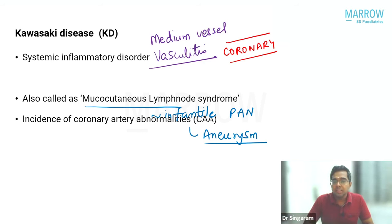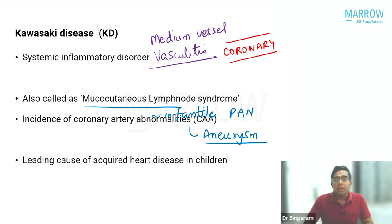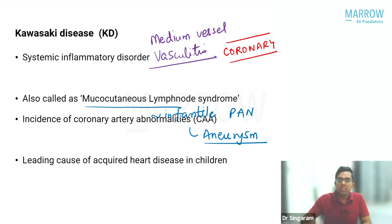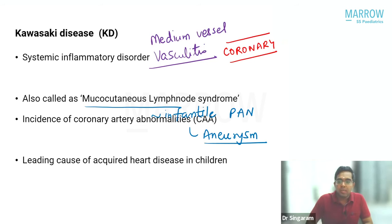Kawasaki disease is the most common childhood vasculitis in India. Worldwide, Henoch-Schönlein Purpura is the most common, but in India it is now Kawasaki disease. Additionally, Kawasaki disease has become the leading cause of acquired heart disease in children, replacing rheumatic heart disease, which was previously the most common cause.